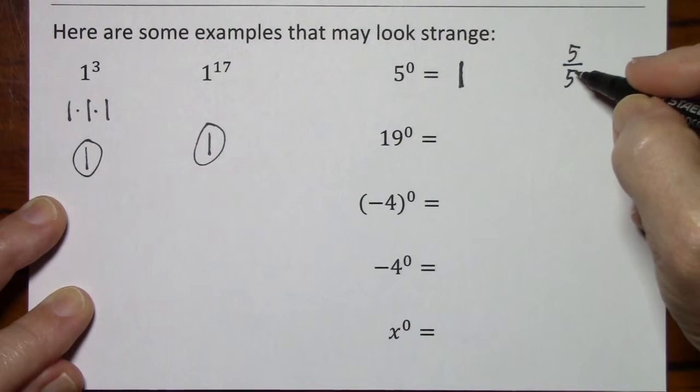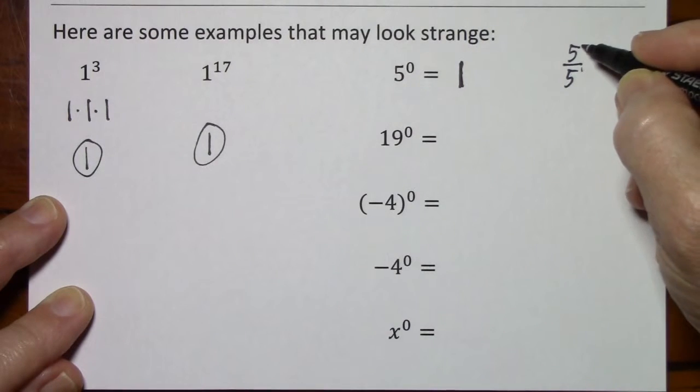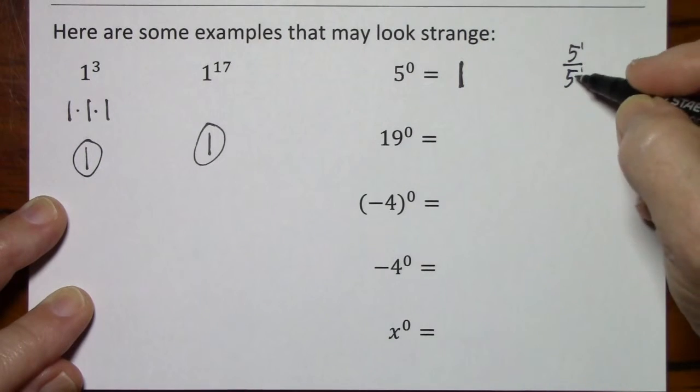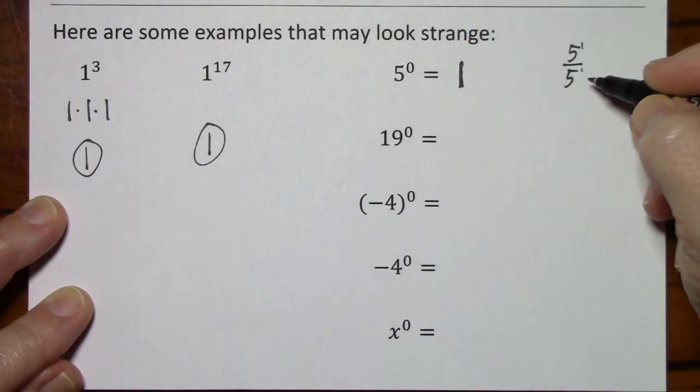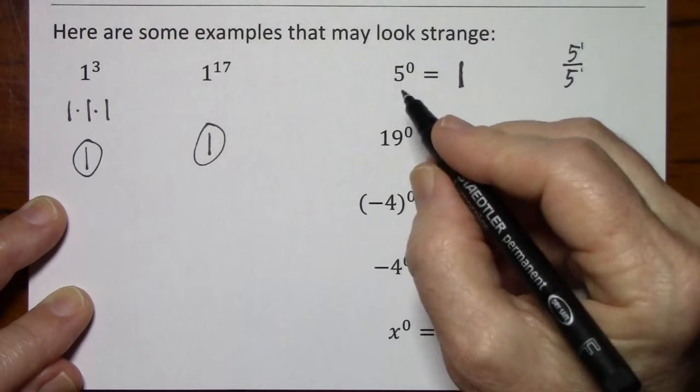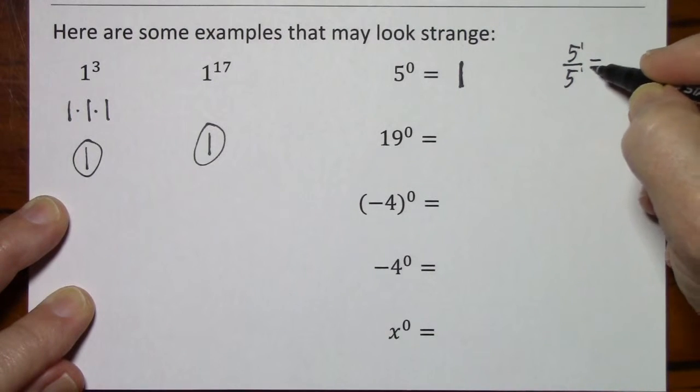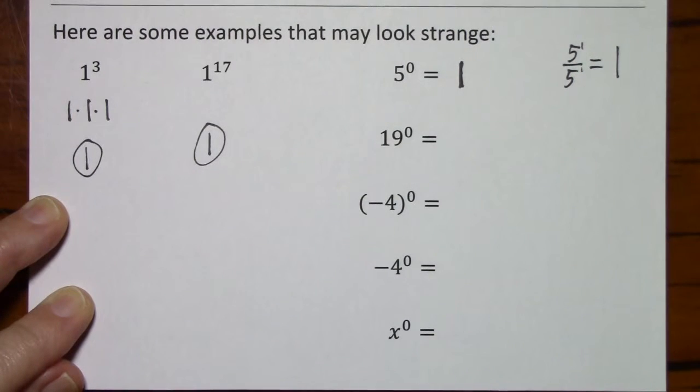And this is because in order to do this division, one way I can do that is to subtract exponents. So this is 5 to the 1st and 5 to the 1st. As long as the bases are the same, you can actually subtract exponents. 1 minus 1 is 0. So that's how you get 5 to the 0. And obviously 5 over 5 is equal to 1.